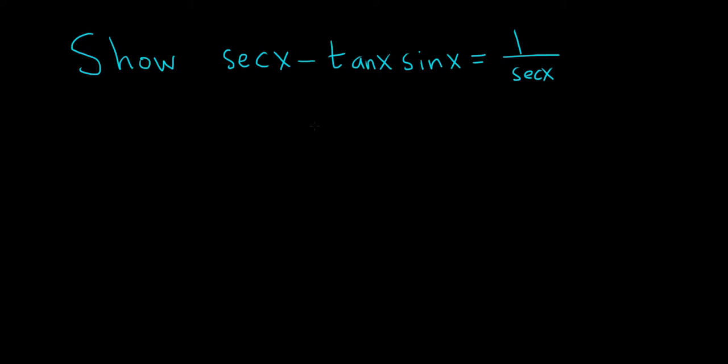Show that secant x minus tangent x times sine x equals 1 over secant x. We're going to prove this trig identity.